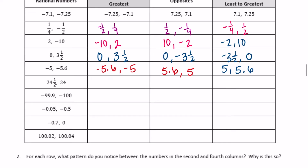Twenty-four-and-a-half and twenty-four. So least to greatest: twenty-four is less than twenty-four-and-a-half. Their opposites would be negative twenty-four and negative twenty-four-and-a-half. If we were to list those in order from least to greatest, negative twenty-four-and-a-half would be less than negative twenty-four — it's further away from zero than negative twenty-four.